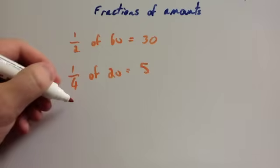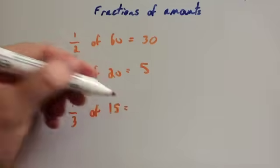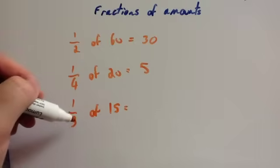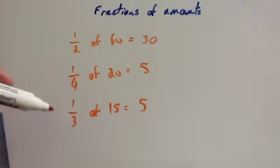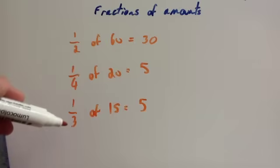If you wanted to get a third, so a third of 15, when you do a third, you do 15 divided by 3. 15 divided by 3 is 5. So whenever you want to get a fraction of a number, whenever there's a 1 on the top line, you just divide it by the bottom number.